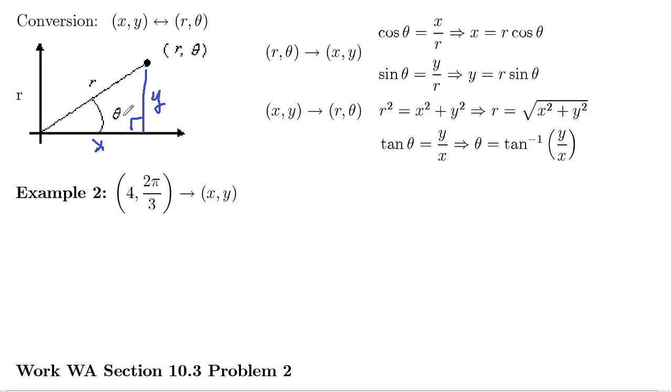The sine of theta is opposite over hypotenuse, y over r, so cross-multiply, y is r sine theta. If you want to change the other way from Cartesian to polar, notice that x-squared plus y-squared is r-squared on that right triangle here. So r is square root of x-squared plus y-squared.